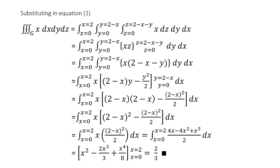Substituting the upper and lower limits for y gives x[(2−x)² − (2−x)²/2] = x·(2−x)²/2. Expanding (2−x)² and multiplying by x gives (4x − 4x² + x³)/2. Integrating with respect to x from 0 to 2: [x²/2 − 2x³/3 + x⁴/8] from 0 to 2. Substituting the upper limit and simplifying gives the answer 2/3.